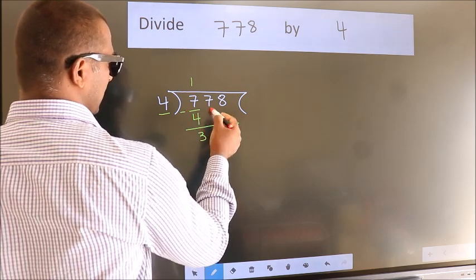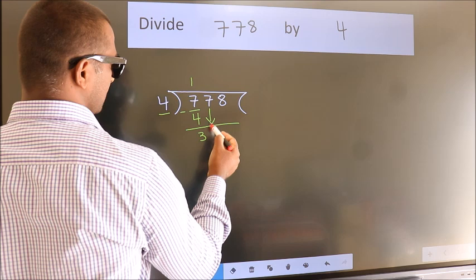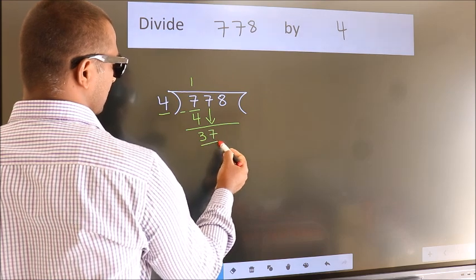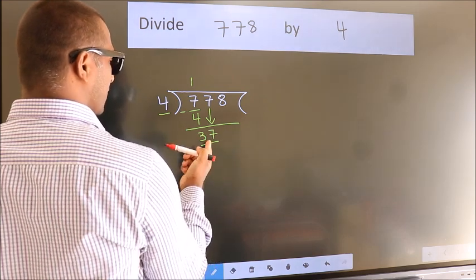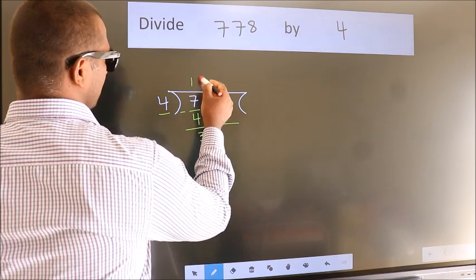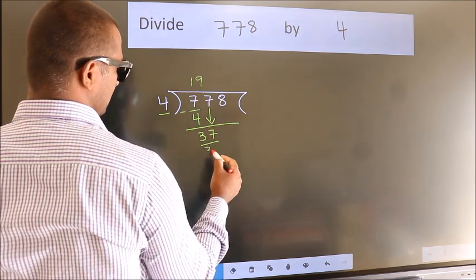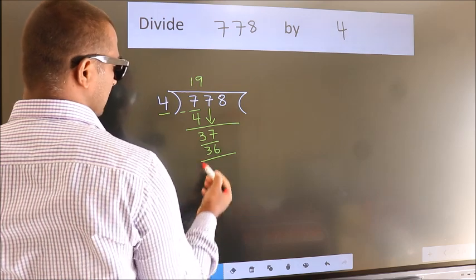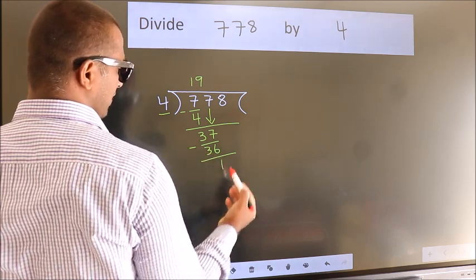After this, bring down the next number. 7 down, giving us 37. A number close to 37 in the 4 times table is 4 times 9, which is 36. Now we subtract and get 1.